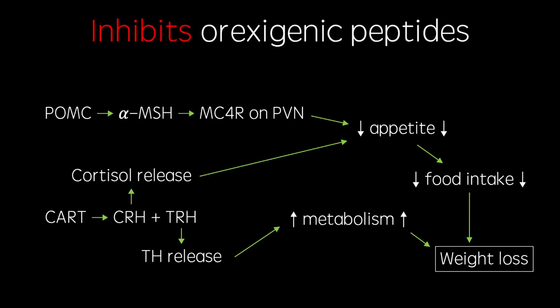As well as activating the release of anorexogenic peptides, leptin receptor activation also inhibits the release of orexogenic peptides, one of which is neuropeptide Y. Neuropeptide Y binds to Y1 receptors on POMC neurons, preventing POMC release. Agouti-related peptide, or AgRP, is co-expressed with NPY and acts as an antagonist to MC4 receptors. The inhibition of these peptides by leptin receptor activation disinhibits the appetite reduction produced by POMC.